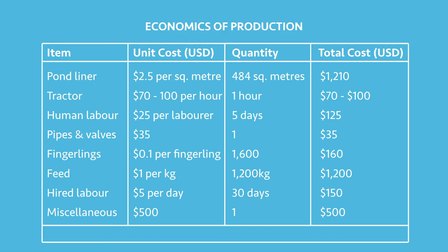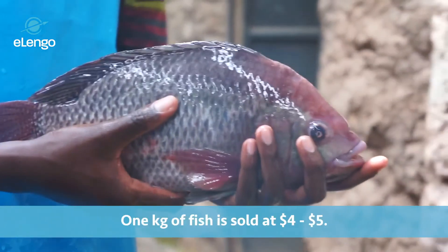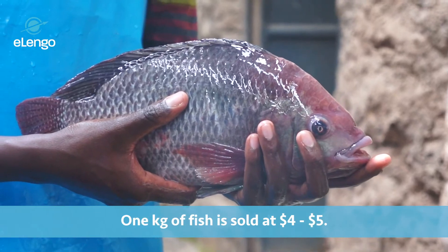We shall add some miscellaneous costs, which include the cost of a weighing scale, the cost of fencing the fish pond to avoid predators, and the cost of a bird net if necessary. These can average about 500 dollars. The expected weight for a fish ready for harvesting is about 500 grams, and a kilogram of fish is about 45 dollars.